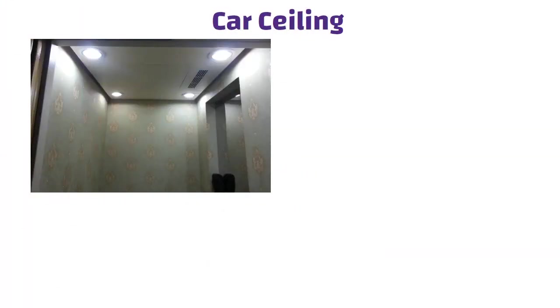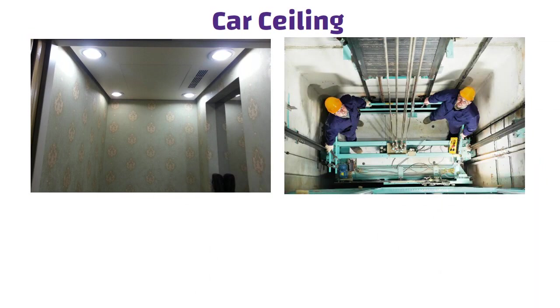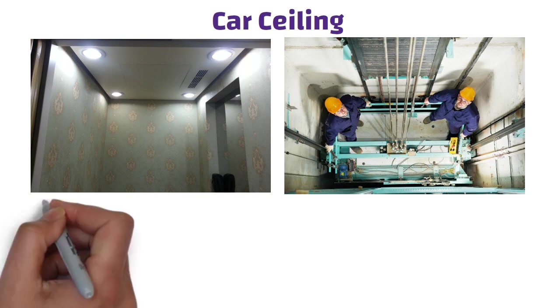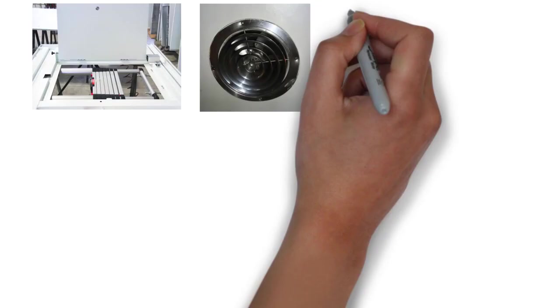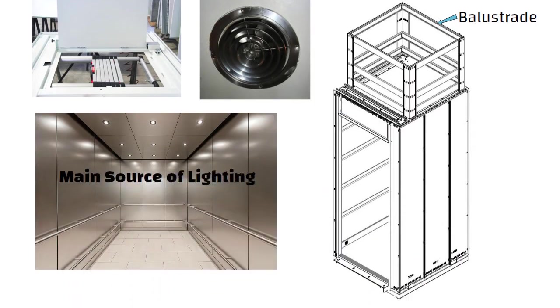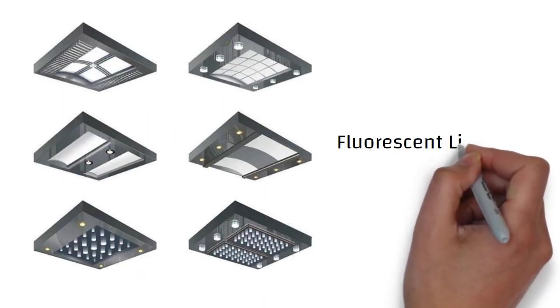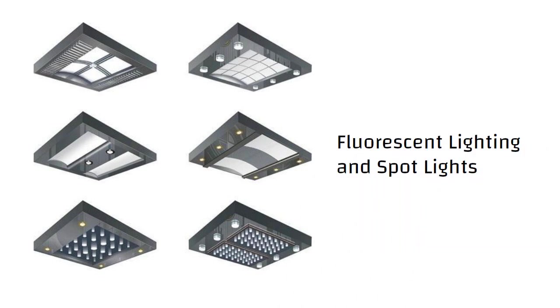Car ceiling. The car ceiling is designed to support two persons during maintenance operations without permanent deformation. The car ceiling is also prepared to mount the emergency trap door, blower fan, and balustrade. The false ceiling is the main source of lighting in the elevator car. There are many different designs for elevator lighting. Fluorescent lighting and spotlights are the most common lighting elements used, and a combination of the two can also be used.